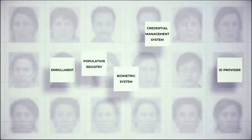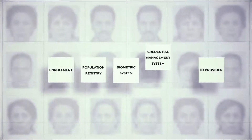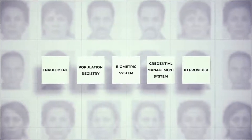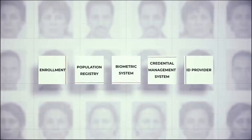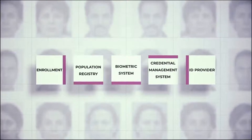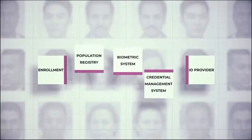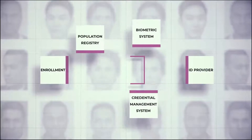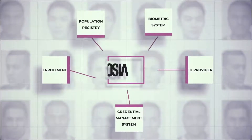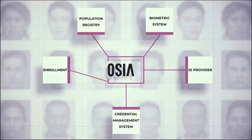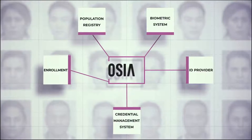These are all the various building blocks available on the market necessary to build your ID management system. If these building blocks include OSIA interfaces, they can be easily connected, even if from different vendors, to form the identity management solution that fits your needs. Let's take an example: a government is issuing an identity card, physical and digital, to their citizens.